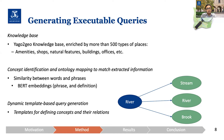The next step in the pipeline is to generate the executable query. To make an executable query, we need to match the information extracted from the question to what we have inside the knowledge base. So we need to perform concept identification for event names and place names, and ontology mapping for properties, place types, and event types, to find out which vocabulary in the ontology is suitable for what we have extracted from the question.